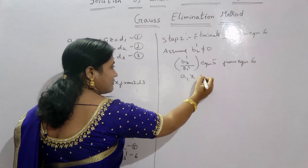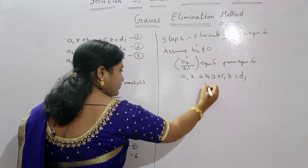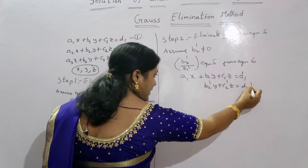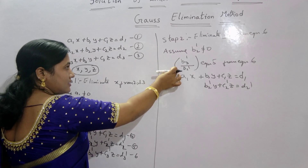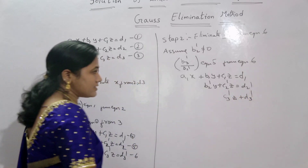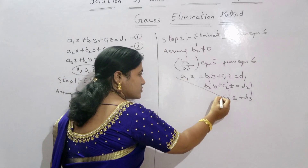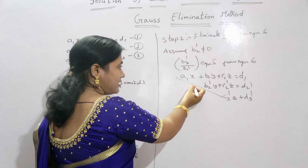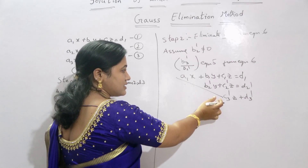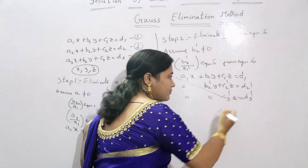The resulting equations are: a1x + b1y + c1z = d1; b2'y + c2'z = d2'; and by operating, c3'z = d3'. The system now looks like an upper triangular system, where the a2x term is 0, and the a3x and b3y terms are also 0.